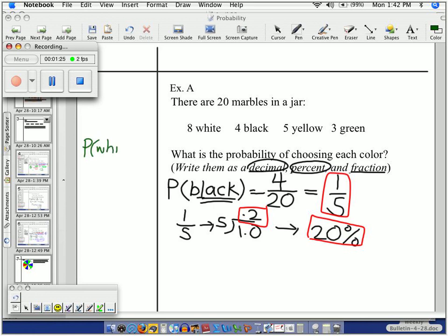40%. 40%. What was the probability of the black we just got? 100%. Hey, turn and talk to your neighbor. Do you see a relationship here?